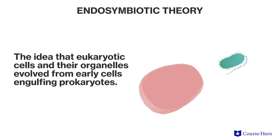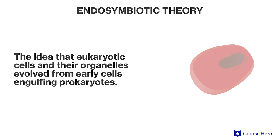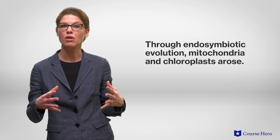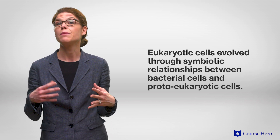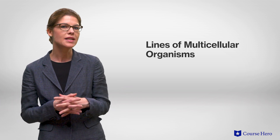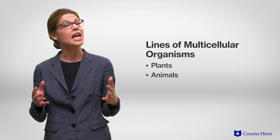The endosymbiotic theory is the idea that eukaryotic cells and their organelles evolved from early cells engulfing prokaryotes. Millennia ago, a host cell and bacteria that were ingested could have become dependent upon one another for survival. Over millions of years, this relationship evolved into a permanent one. Through this evolution, mitochondria and chloroplasts arose. Eukaryotic cells evolved through symbiotic relationships between bacterial cells and proto-eukaryotic cells. This allowed single-celled organisms to develop greater complexity and form multicellular organisms — plants, animals, and fungi — all of which lived in the oceans.